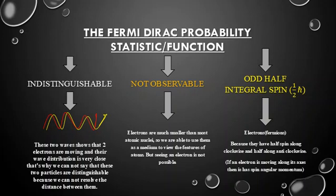The second feature is not observable: electrons are much smaller than atomic nuclei, so electrons are used as a medium to observe features of an atom, but seeing an electron directly is not possible. The third feature is odd half-integral spin: electrons have half spin, either clockwise or anti-clockwise along their axis, giving them spin angular momentum.